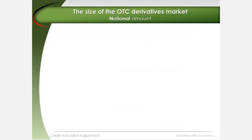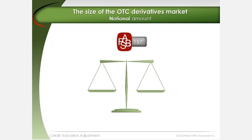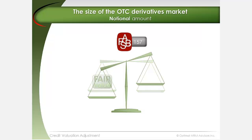In September 2006, the Financial Accounting Standards Board introduced new accounting standards, FAS 157, to provide guidance on how organizations should arrive at the fair value of financial assets and liabilities in financial reporting.